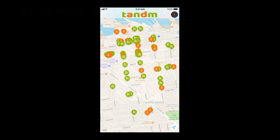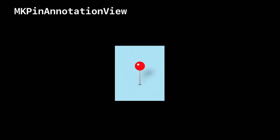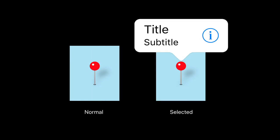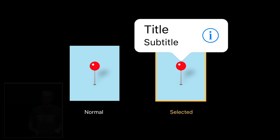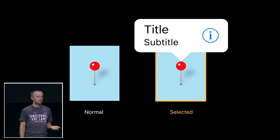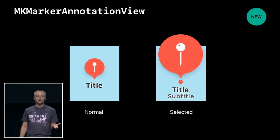The standard way to display annotations has been the pin annotation view since iOS 2. It comes in two states: the normal state where it's just a pin, and the selected state triggered by tapping or programmatically, which shows a callout with title and subtitle. The drawback is we only display title and subtitle when the pin is selected, so the user has to tap on everything to see what they are — which is a bit cumbersome. As you saw in Maps from iOS 10, we use something different.